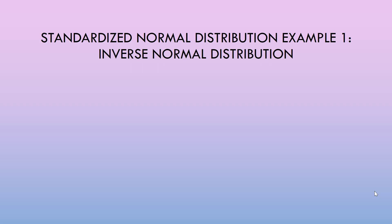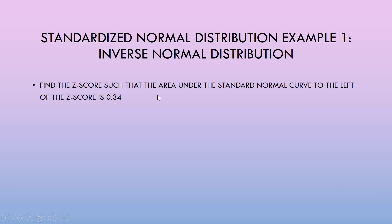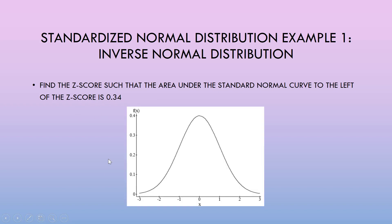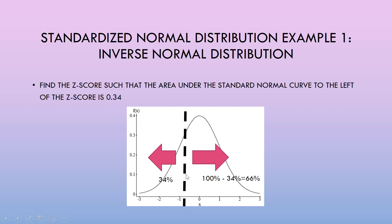Now that the normal calculator is open, let's begin with our first example. Find the z-score such that the area under the standard normal curve to the left of the z-score is 0.34. This question is asking us to cut the normal curve into two pieces so that about 34% of the area under the curve is to the left of this dotted line, and the remaining 66% is on the other side.